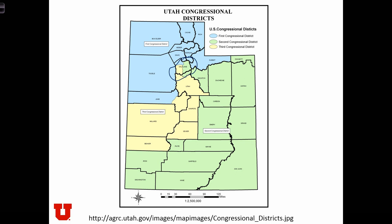So what have the congressmen done by districting the state in this way? They've guaranteed that the strong democratic core in the center of the city is divided three ways and watered down — their influence is watered down by including their vote with the largely Republican constituencies in the rest of the state. By design, they've gerrymandered these districts, taking advantage of the modifiable areal unit problem in order to affect their political will.